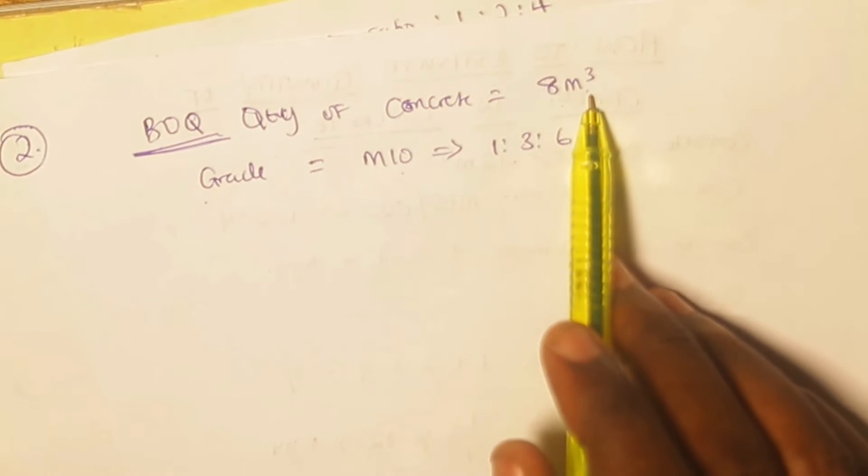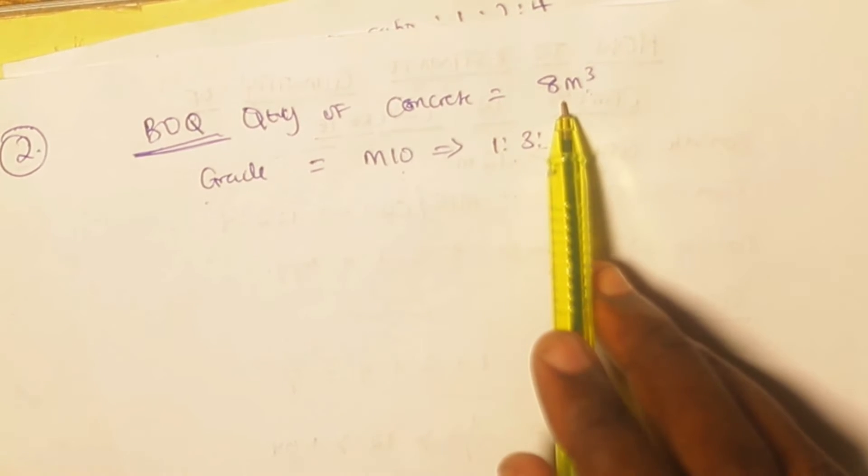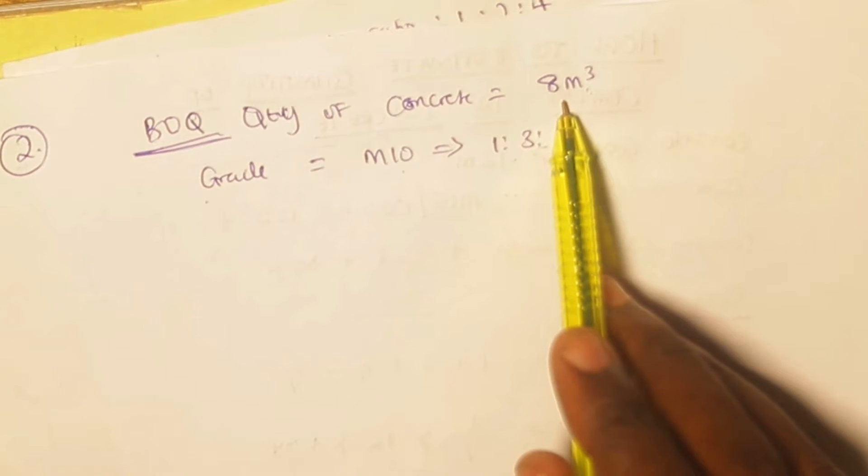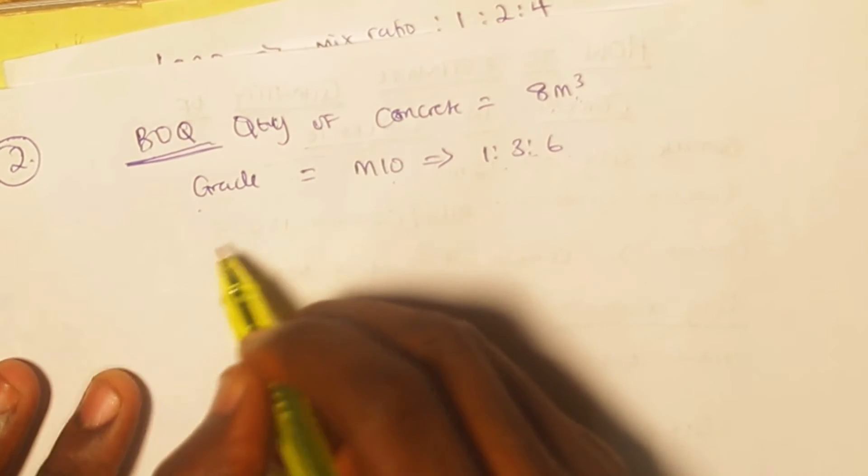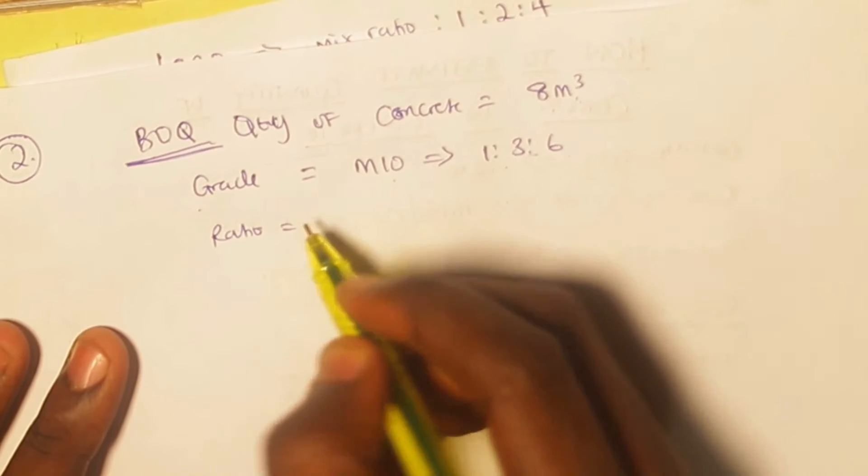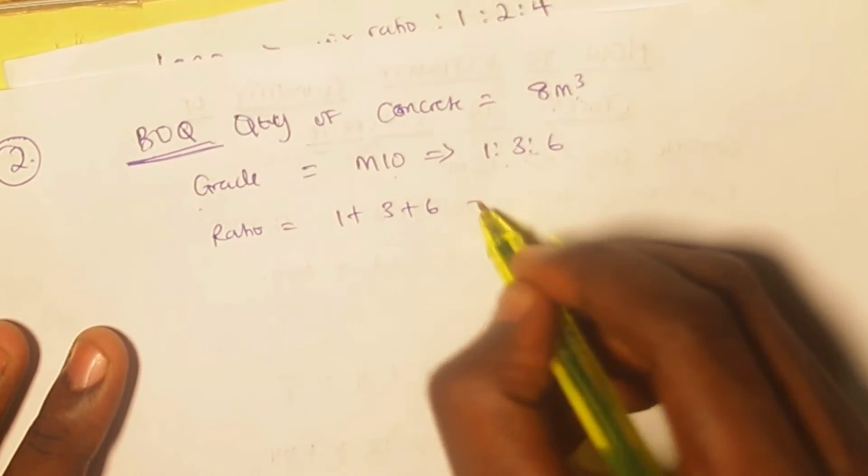Since we now know the grade of concrete and we know the quantity of concrete, what we want to know is the number of bags of cement that can be used for this concrete grade, which is eight meters cube in a bill of quantities. So our calculation will start the same way.